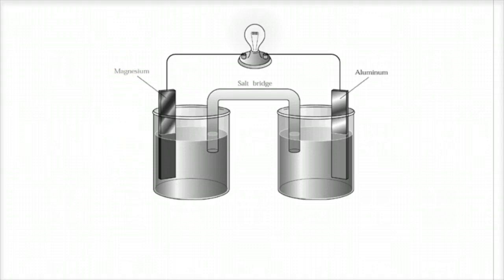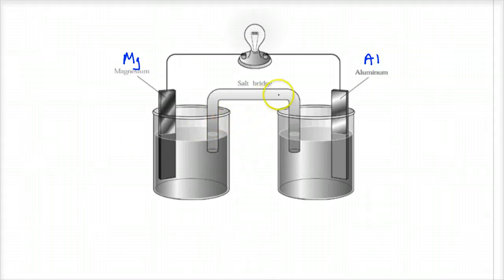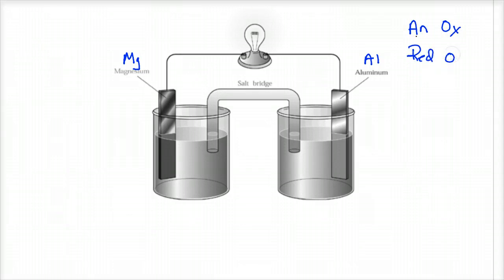So the first step: I have two metals — magnesium and aluminum. The absolute first step in understanding all the components here is to identify your anode. The mnemonic is 'ANOX RED CAT' — oxidation occurs at the anode, reduction occurs at the cathode. So the first step is to find the anode.